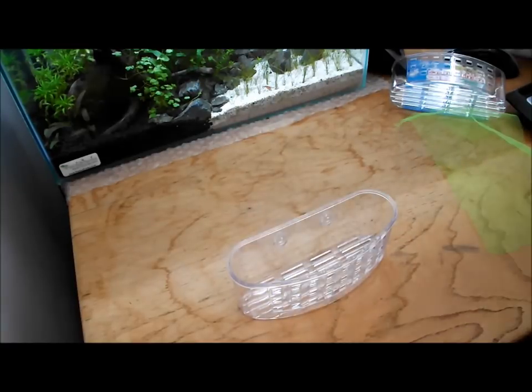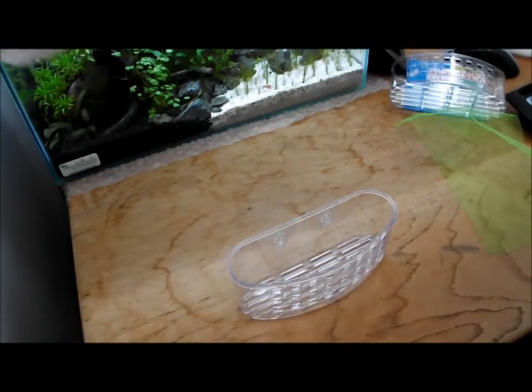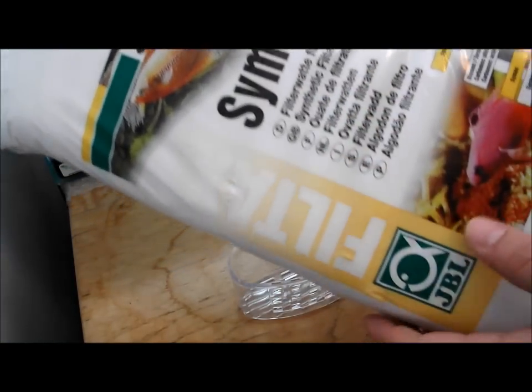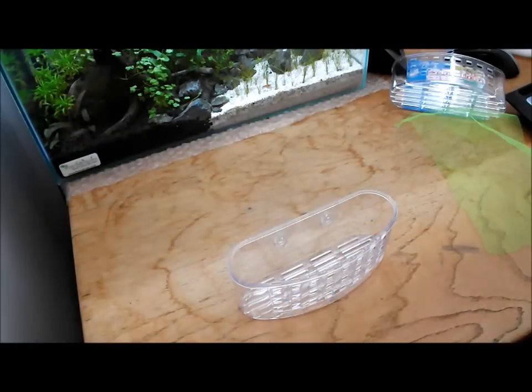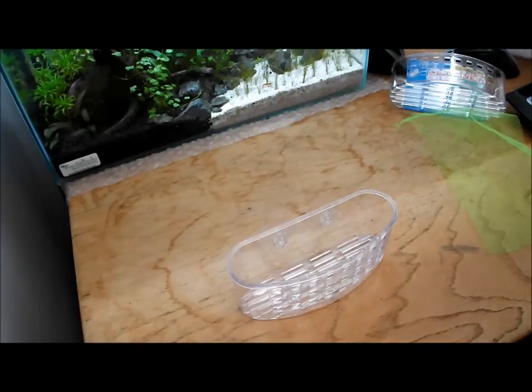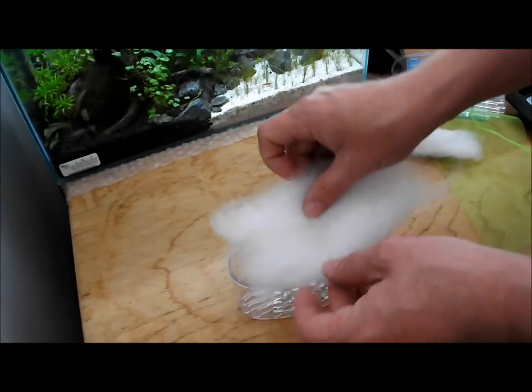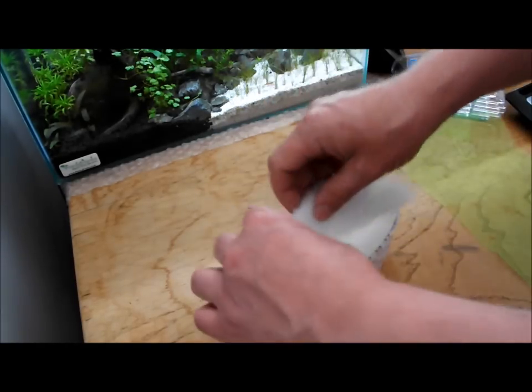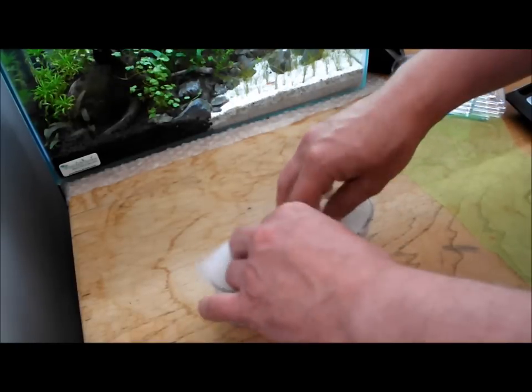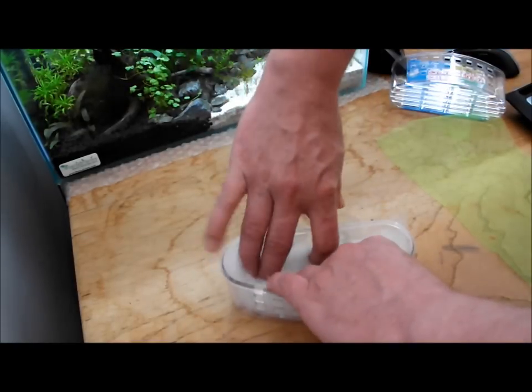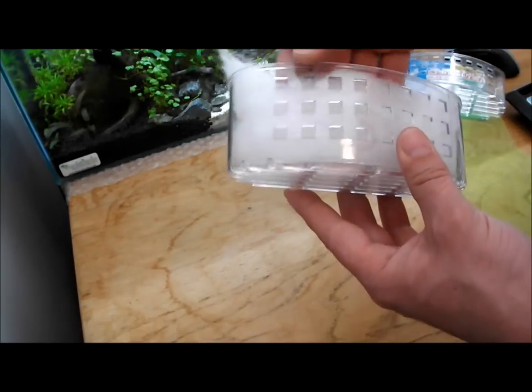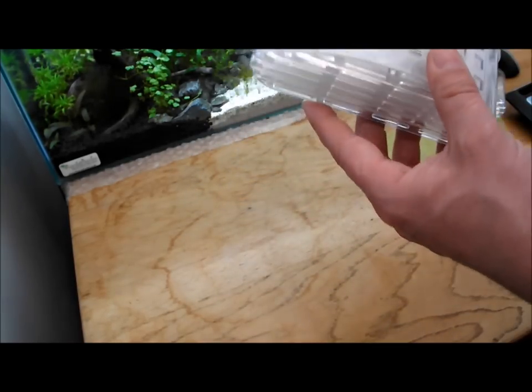Failing that you could always use some filter floss. I buy quite a lot of this. I've always got some lying around. What you can do is put the filter floss in there to block up any holes. Fill it with any substrate and it'll just stop you losing the substrate out of the front and the bottom.